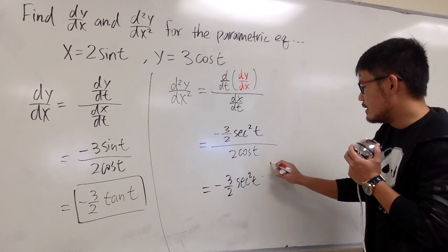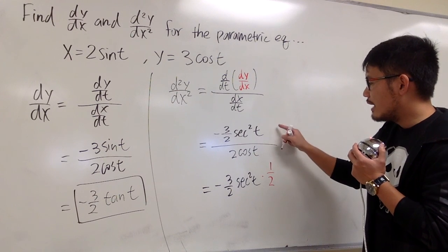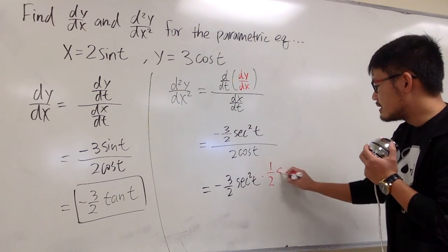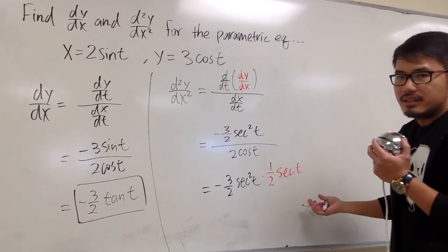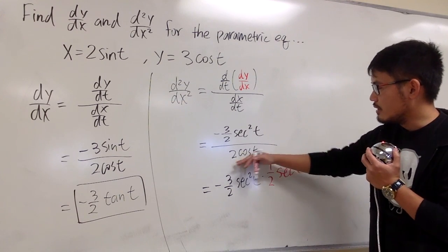I will just write it as 1/2, and then when you have 1 over cos t, it's like another secant t. This is just from the denominator right here.